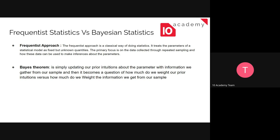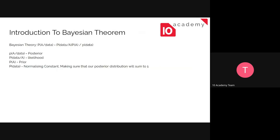The Bayesian approach uses Bayes' theorem — it simply updates our prior intuition about the parameter with information we gather from our sample. It becomes a question of how much we weight our prior intuition versus how much we weight the information from new samples. We might have a prior estimation about a specific parameter, and then we update that parameter depending on new data or new observations.